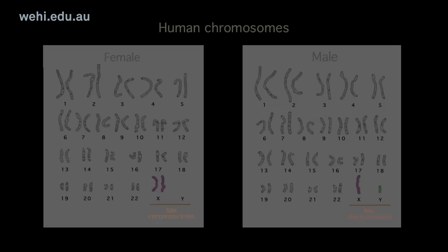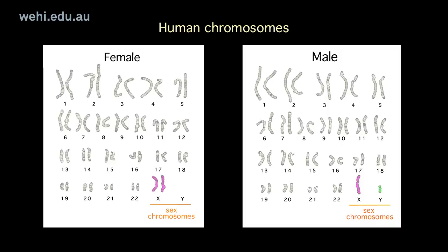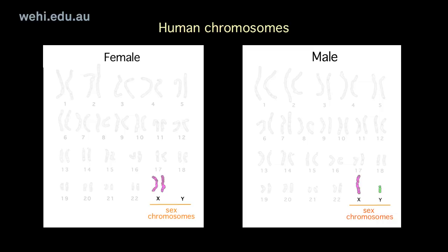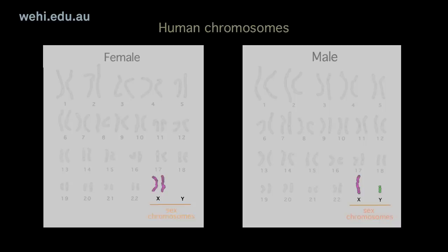Epigenetics and the X chromosomes. Humans have 23 sets of chromosomes. The sex chromosomes, X and Y, determine the sex of an individual. Females have two X chromosomes. Males have one X and one Y chromosome.